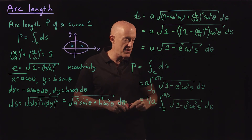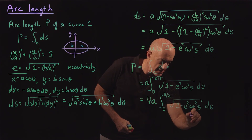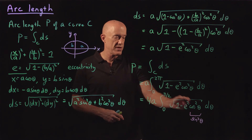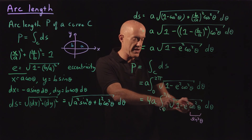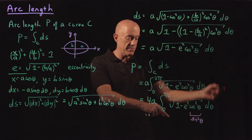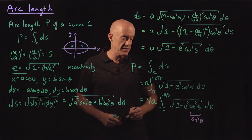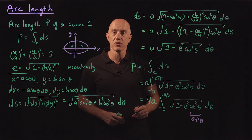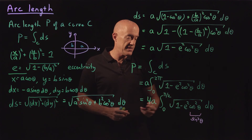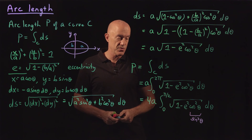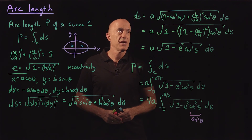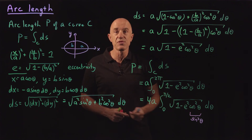It doesn't matter whether we use cosine squared theta or sine squared theta — it's the same integral, since cosine squared goes from 1 to 0 over the interval just as sine squared goes from 0 to 1, giving exactly the same value. So usually when you look this up, say on Wikipedia, you would see a sine squared rather than a cosine squared. That is the formula for the perimeter of an ellipse.